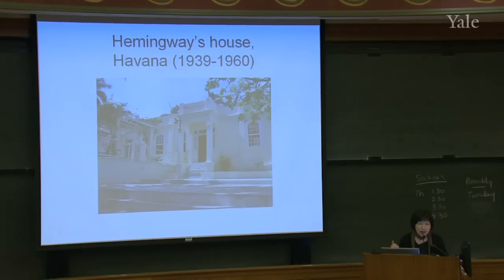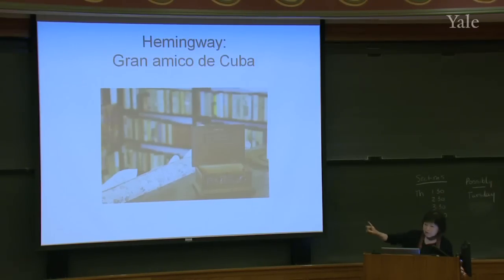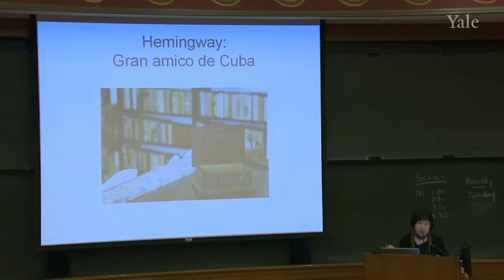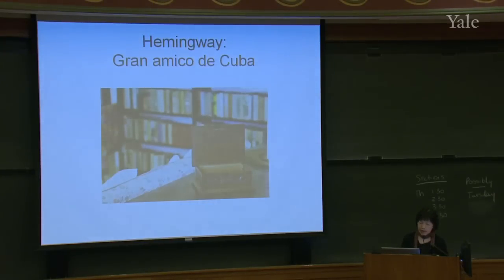I'll put the PowerPoint on our website so you'll be able to see the detail. There's a cigar box that was given to Hemingway, and on it, it says 'Gran Amico de Cuba' — great friend of Cuba. So Hemingway is not just an American author but very much a Cuban author in Cuba. To Have and Have Not actually takes place earlier than Castro's Cuba, but this reflects a continuing relationship that Hemingway had to that country.